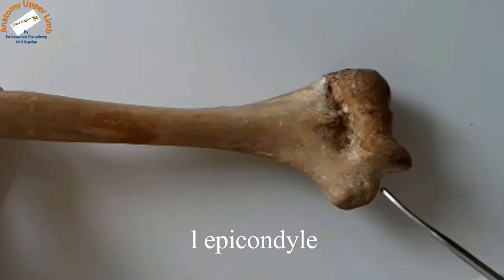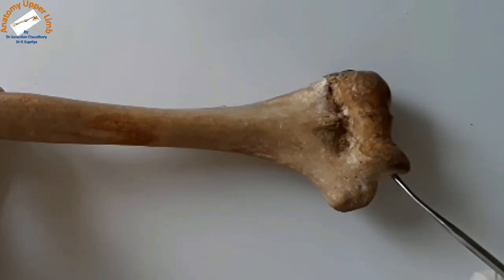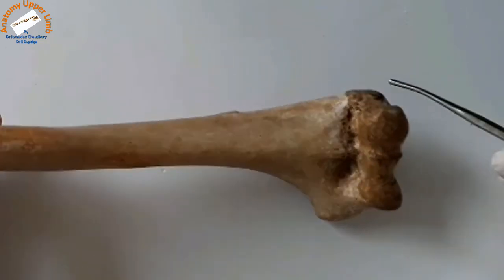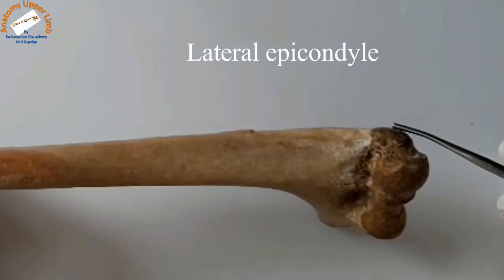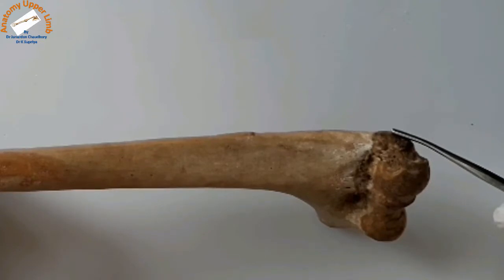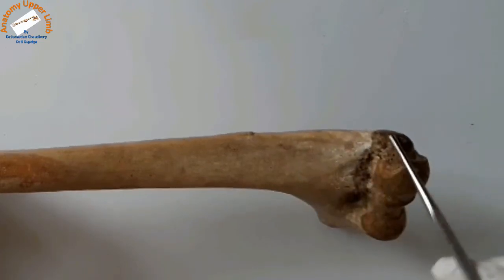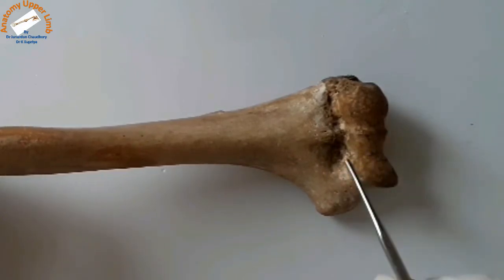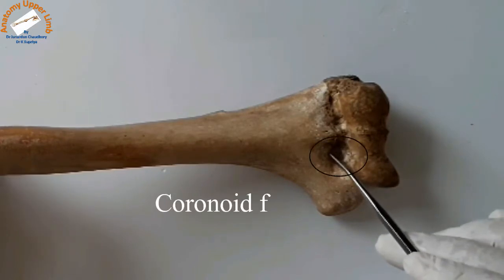On its anterior surface, above the articular surface, it blends with the lateral surface of the trochlea. The lateral epicondyle is smaller than the medial epicondyle. It continues from the lateral supracondylar ridge. On the anterior surface above the articular surface, there are two fossae.